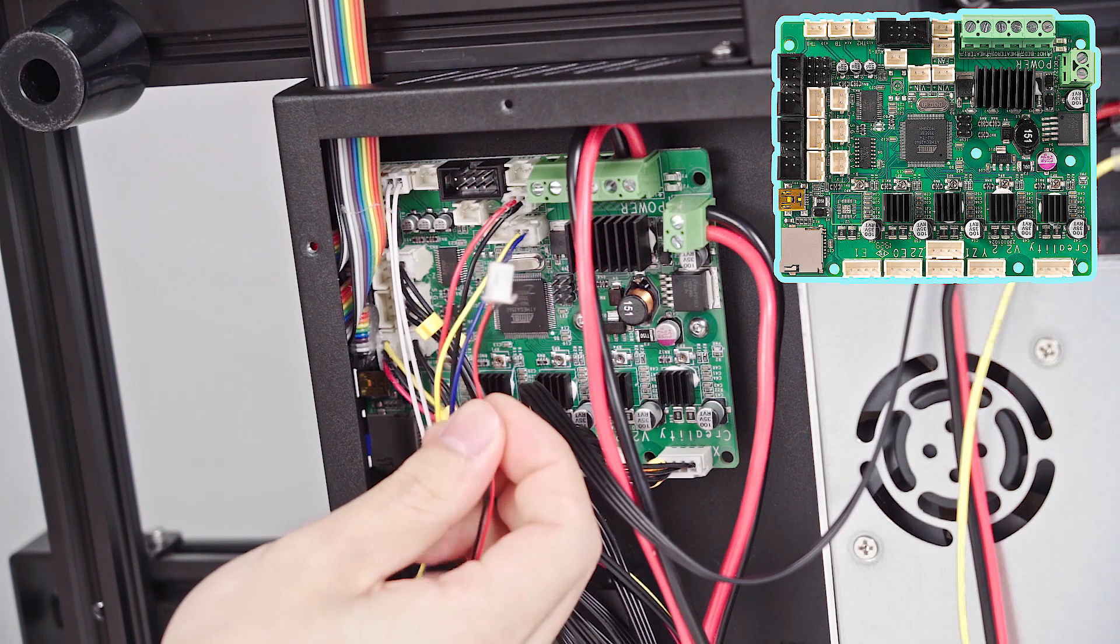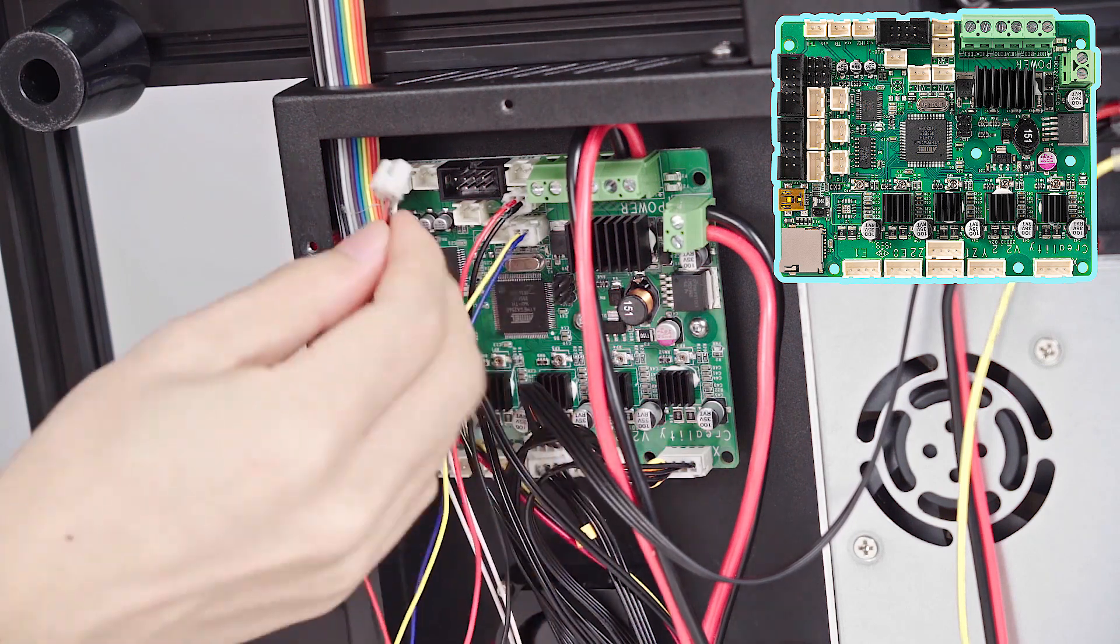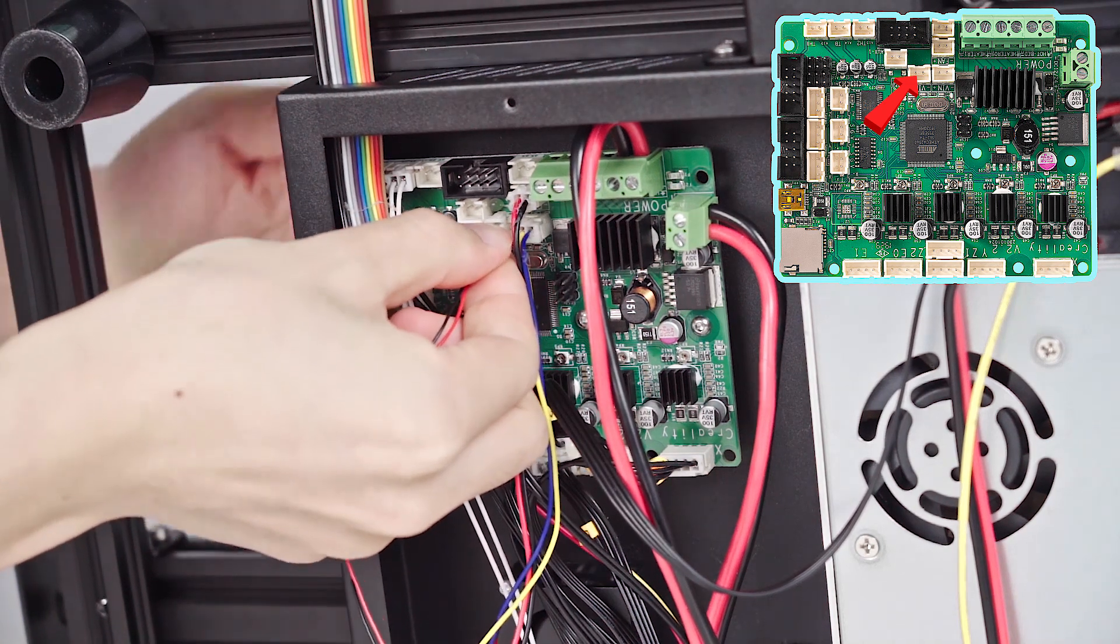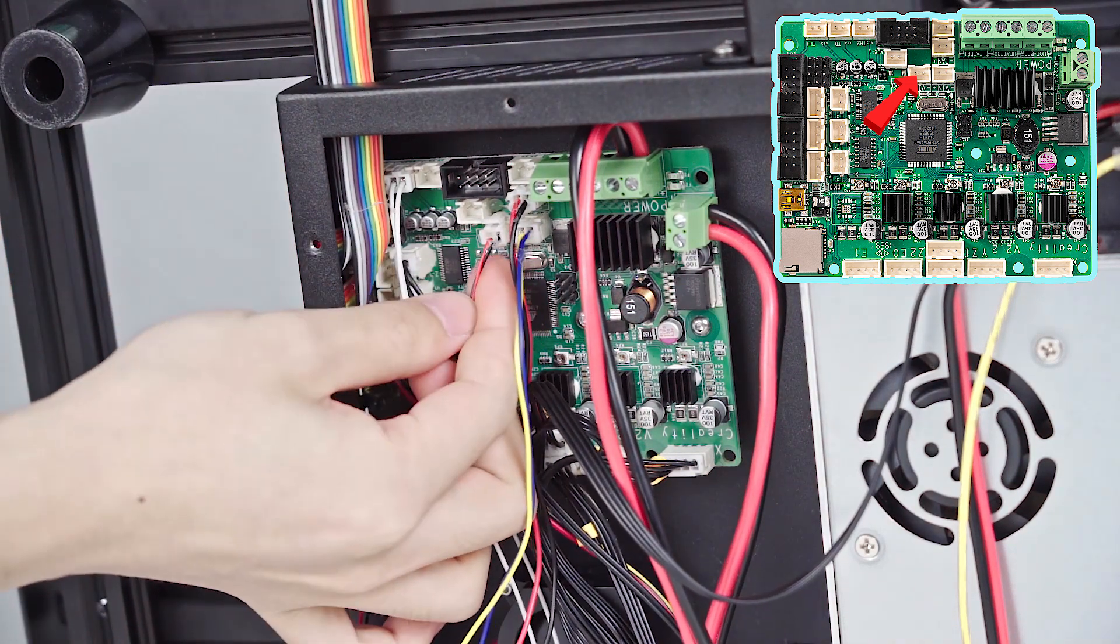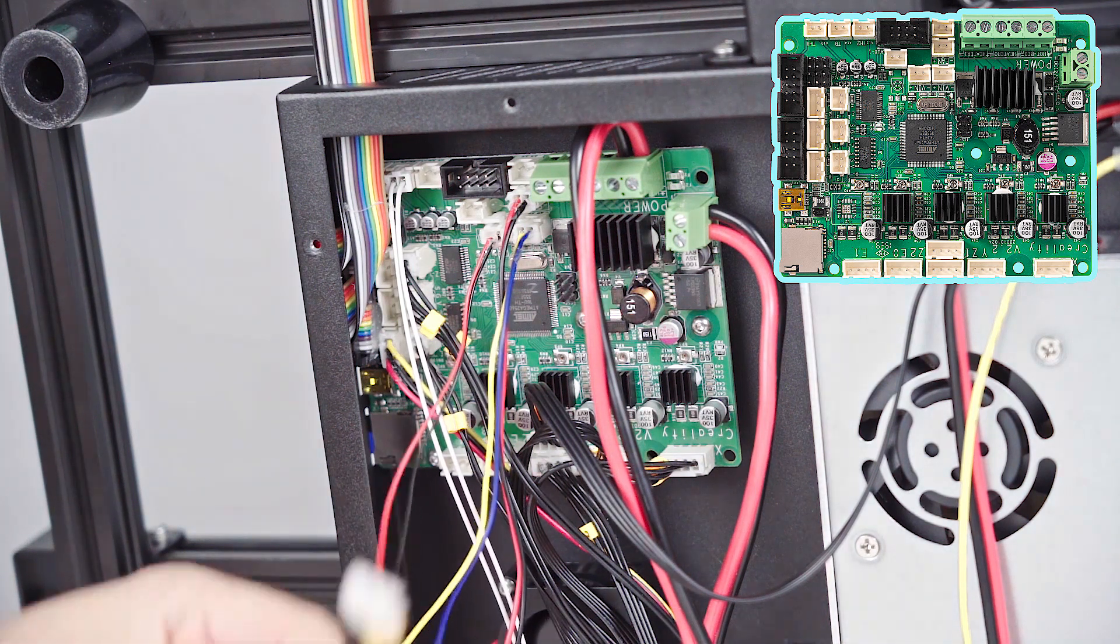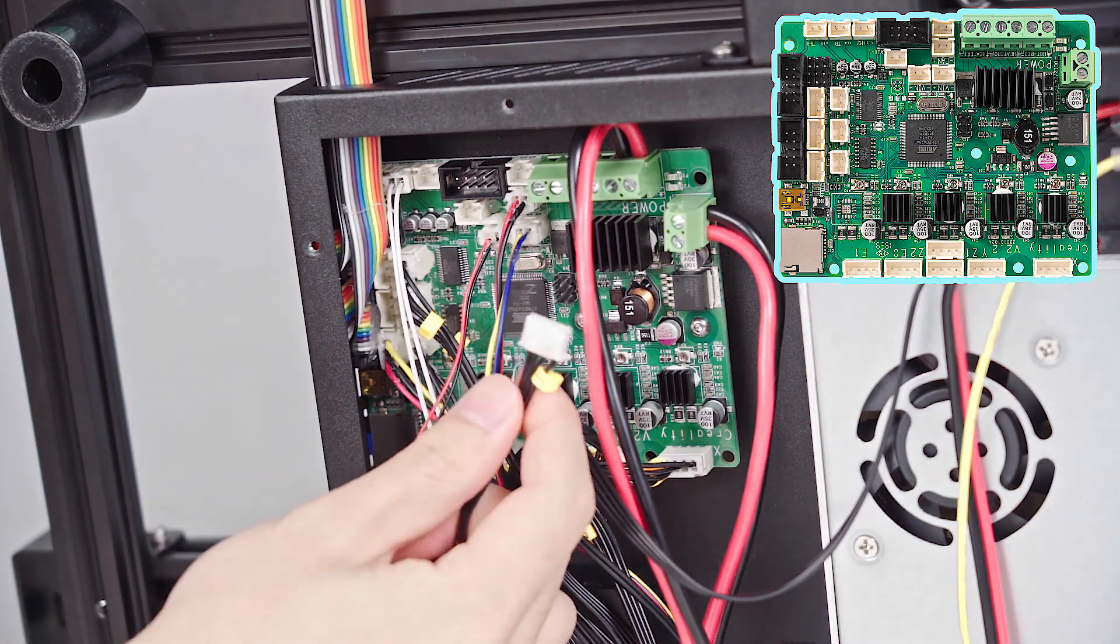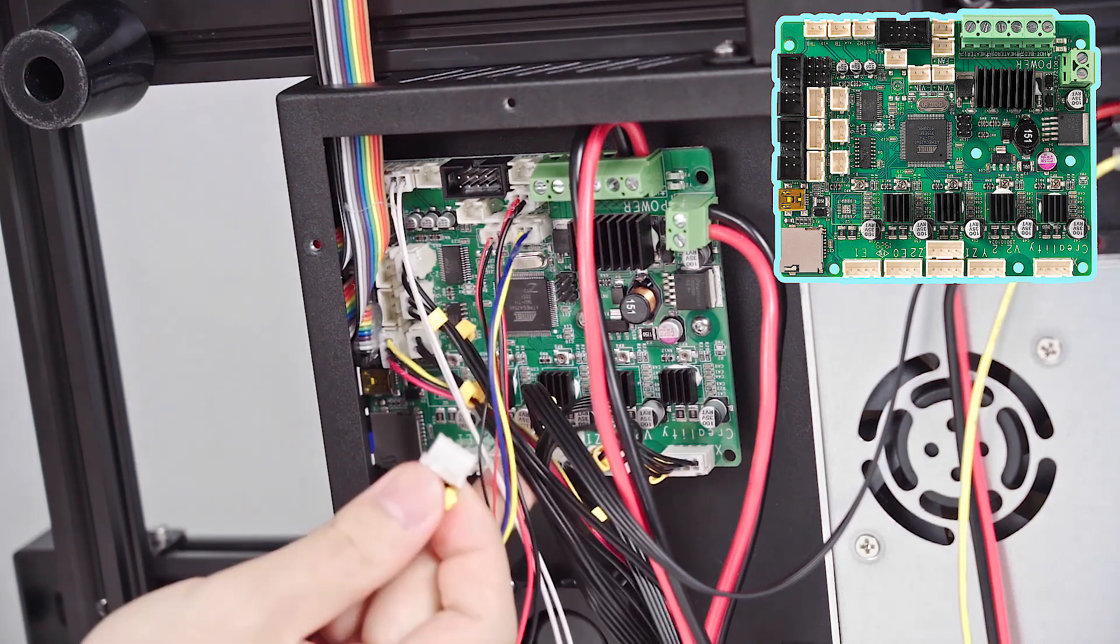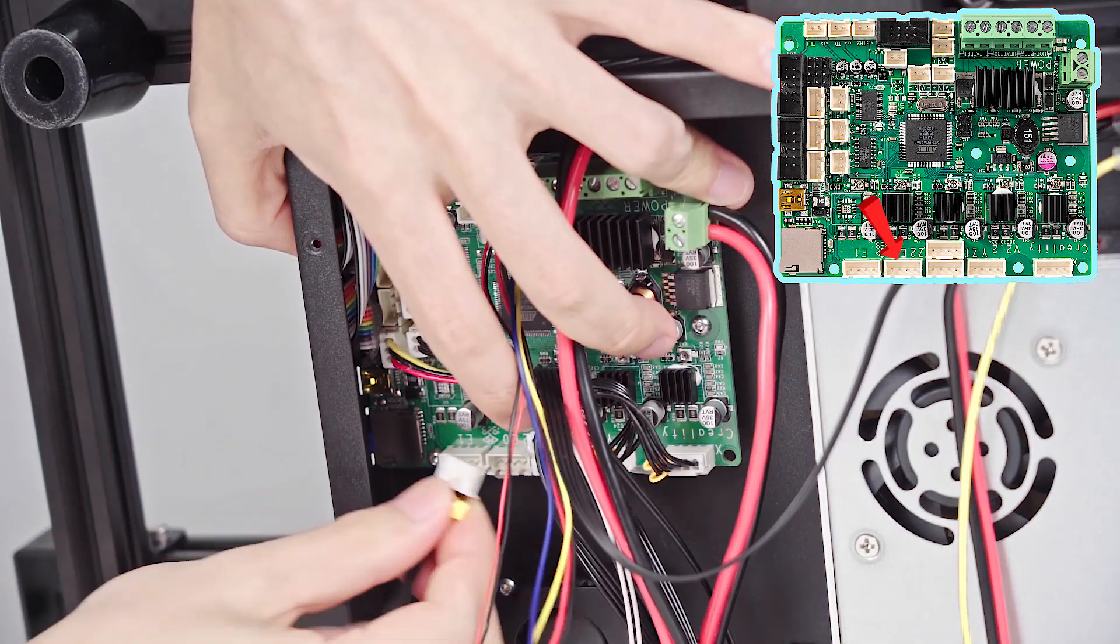Then, the one with the red and the black one. That cable is connected to the fan. And, the one he holds in his hand is going to connect it to E0 motor.